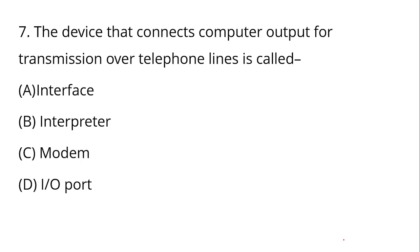Question Number 7: The device that connects computer output for transmission over telephone lines is called — what device connects? It sends computer output over telephone lines for data transmission. So what is that device called? Modem — Option C, Modem is your right answer.